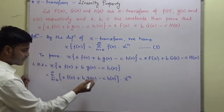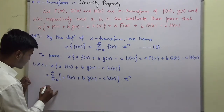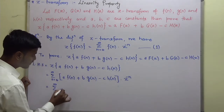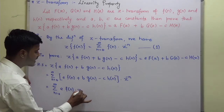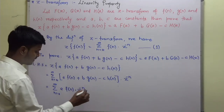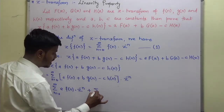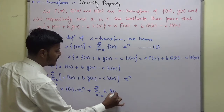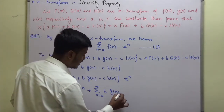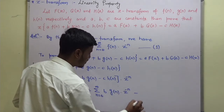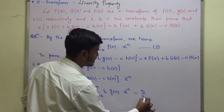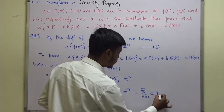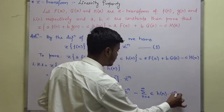Now, try to separate these terms. It becomes: summation N equals 0 to infinity of A times F of N times Z to the power minus N, plus summation N equals 0 to infinity of B times G of N times Z to the power minus N, minus summation N equals 0 to infinity of C times H of N times Z to the power minus N.